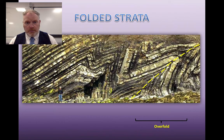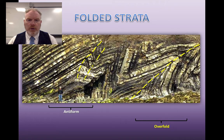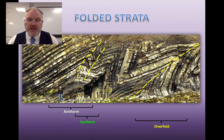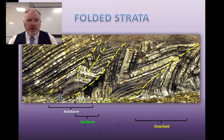Here is our cliff face with some distinctive folded rocks. Let's put some axes on here. We've clearly got a fold axis here — it's an upfold, so that's an anti-form. We have another axis there — a downfold this time, so it's a syn-form. The next fold axis you can see here: these folds are asymmetrical with limbs of different lengths. This one depends on what you think the limb on the right-hand side is — you may think it's vertical or slightly overturned, so it's either an anti-form or an overfold. Either is an acceptable answer.